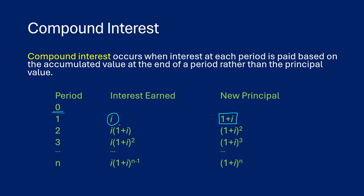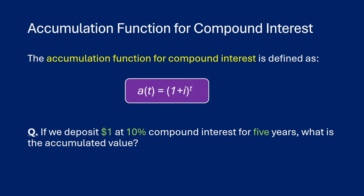So at the second period you'll have your original one plus i, and you'll be multiplying it by the new interest rate. What you end up with is one plus i squared if you multiply these out. When you get to n periods, your new principal is going to be one plus i to the power of n if you're investing just one dollar. So our accumulation function for compound interest is: a(t) = (1 + i)^t.